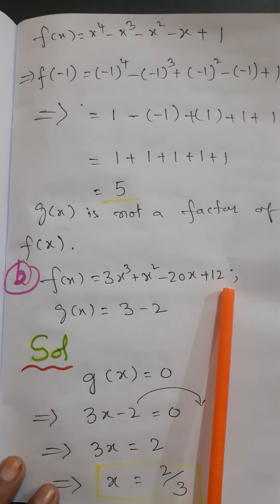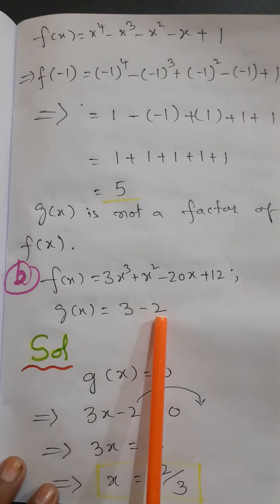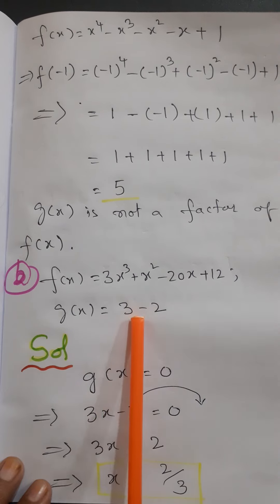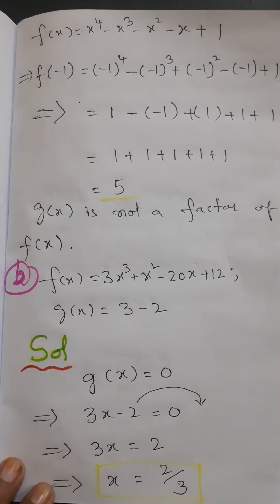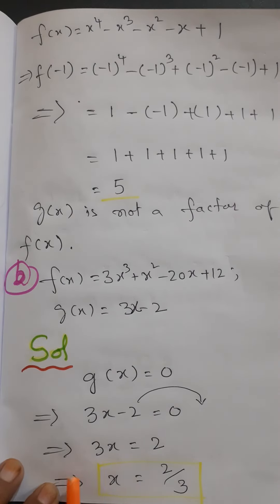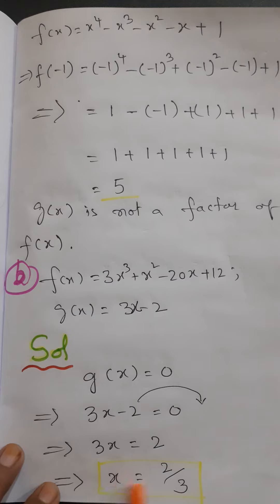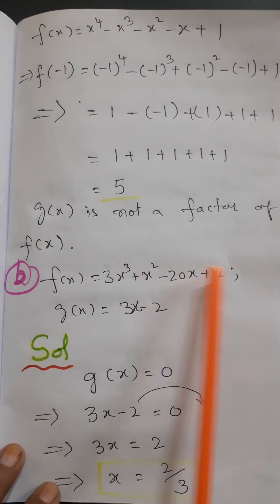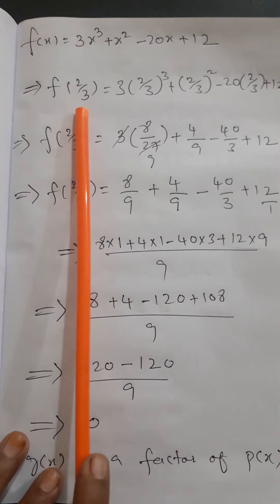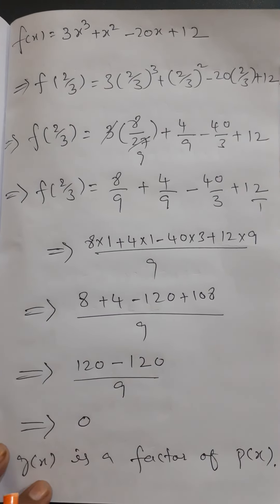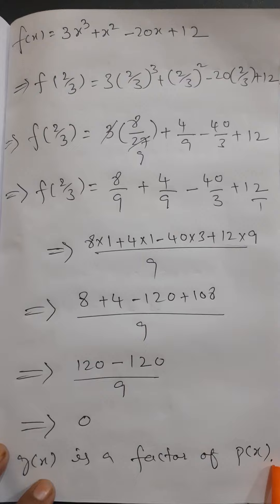For part (b), we set g(x) = 0: 3x - 2 = 0, so 3x = 2 and x = 2/3. Now we substitute x = 2/3 into f(x). When we substitute this value, the result is equal to 0, which means g(x) is a factor of f(x).